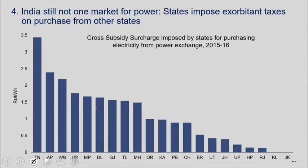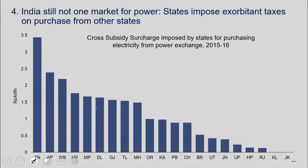We don't have free trade in power within India, which I think makes a mockery of India as one economic market. Some of these charges are quite high — in Tamil Nadu for example there are cross-subsidy surcharges of around three and a half rupees per unit. The current market rate is around two and a half rupees per unit, so you would have to pay more than 100% tax on top of the market price.